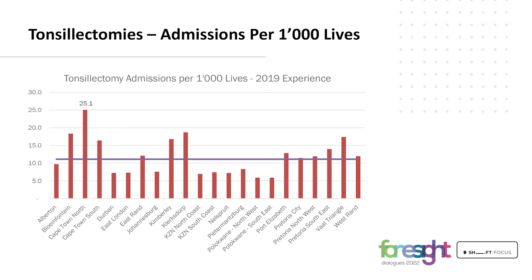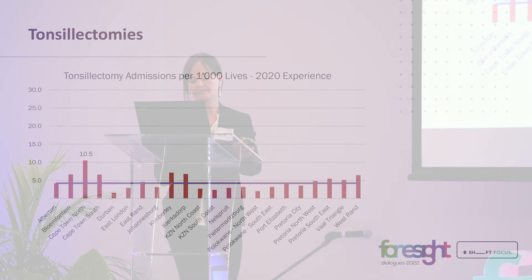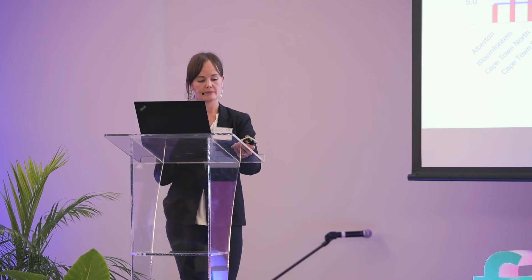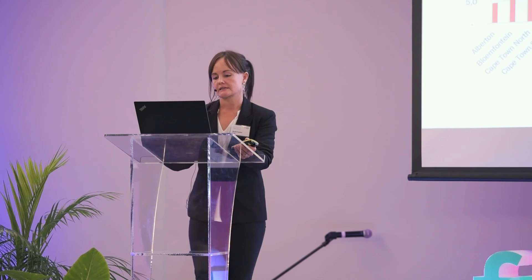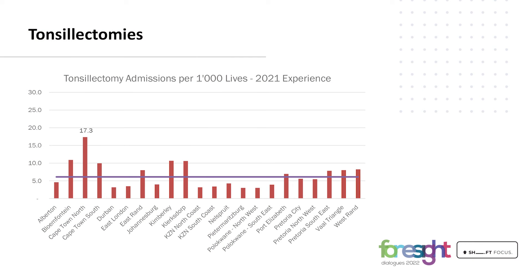Cape Town North stands out in terms of tonsillectomy rates — 25.1 admissions when the average over the period was 11.1. Looking at the 2020 experience, a similar view is seen with Cape Town North still standing out, even in the midst of the COVID pandemic and lockdowns and the suppressed admission volumes seen in 2020. The anomalous experience continues into 2021, where we see admission numbers start to increase, with Cape Town North again standing out with its anomalous experience.